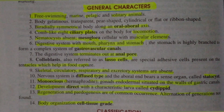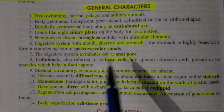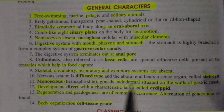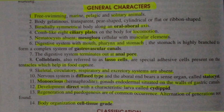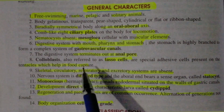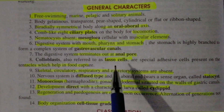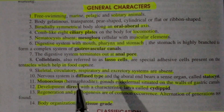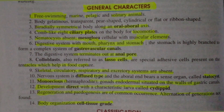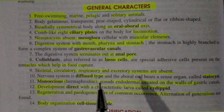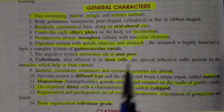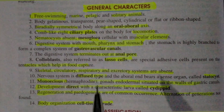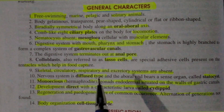The digestive system includes a mouth, pharynx (grasani), and stomach (amasya). The stomach is highly branched, and further forms a complex system called the gastrovascular canal (jathar sambahan dalika pradali).